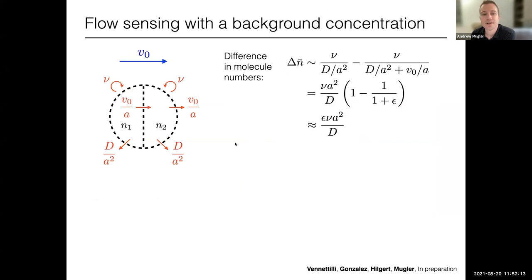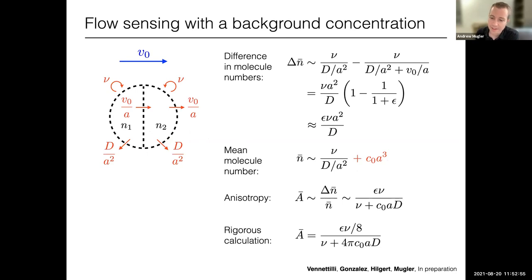So we can return to this kind of like thought experiment here and ask, okay, well, how does this change when you're doing flow sensing, but now with a background concentration? And the answer is that the difference in molecule numbers on the two halves of the cell, well, that doesn't change, right, because the background just lifts both up. But the mean molecule number in the cell itself, or in either half, you could say, does change, right? That's lifted up by the background concentration times the volume of the cell. And if you think about the anisotropy measure as basically the ratio of the difference to the mean, then you can see that it falls off with the background concentration.